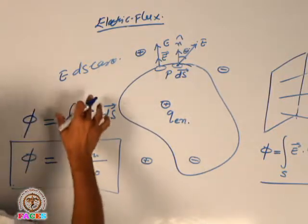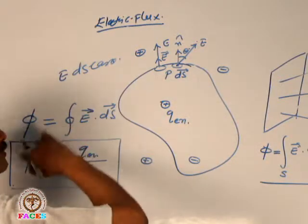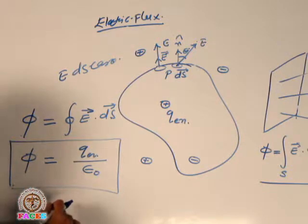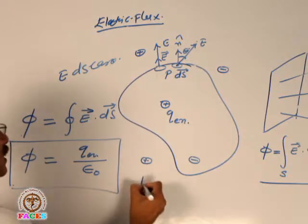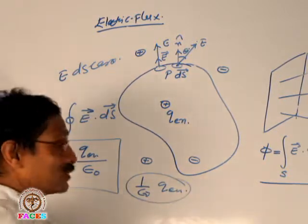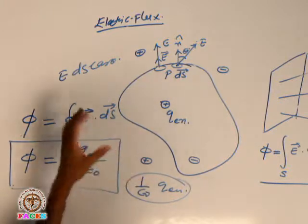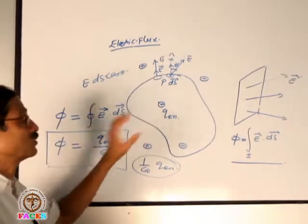अगर हम यह mammoth task लेते हैं कि हर point पर — infinite number of points हैं — हम calculate करेंगे और सबको add करके total flux निकालेंगे, तो result आएगा: charge enclosed divided by epsilon₀, यानि (1/ε₀) × charge enclosed by the surface। यही Gauss theorem है। According to Gauss theorem, total flux across a closed surface is equal to (1/ε₀) times the total charge enclosed by the surface.